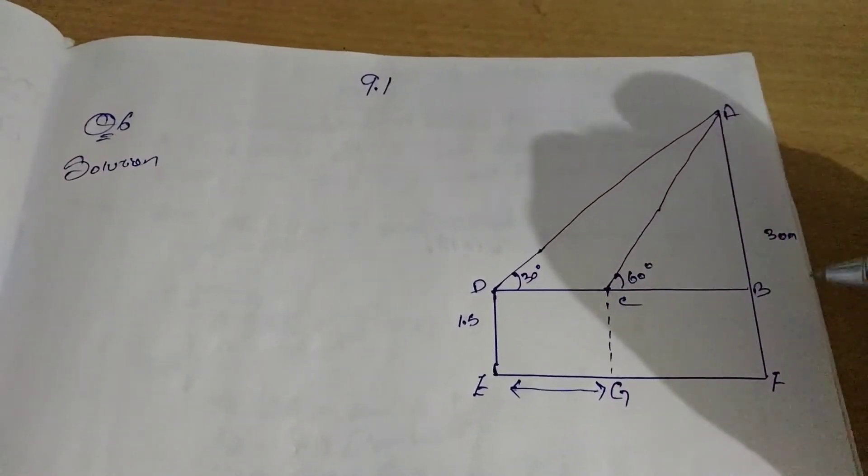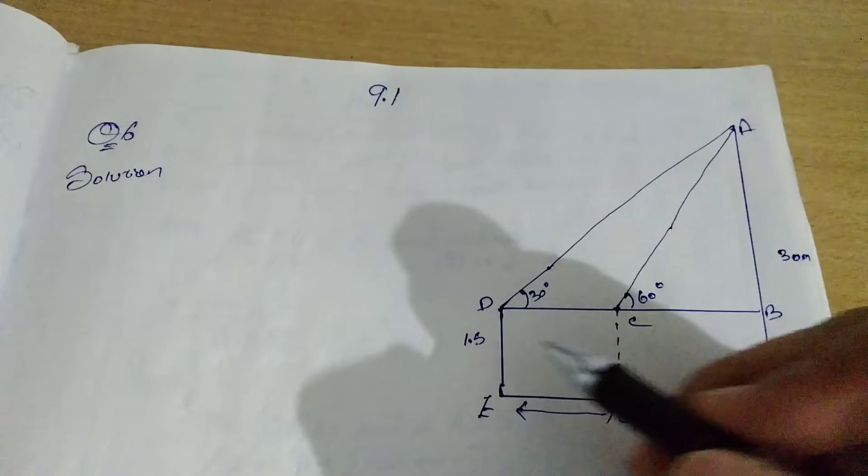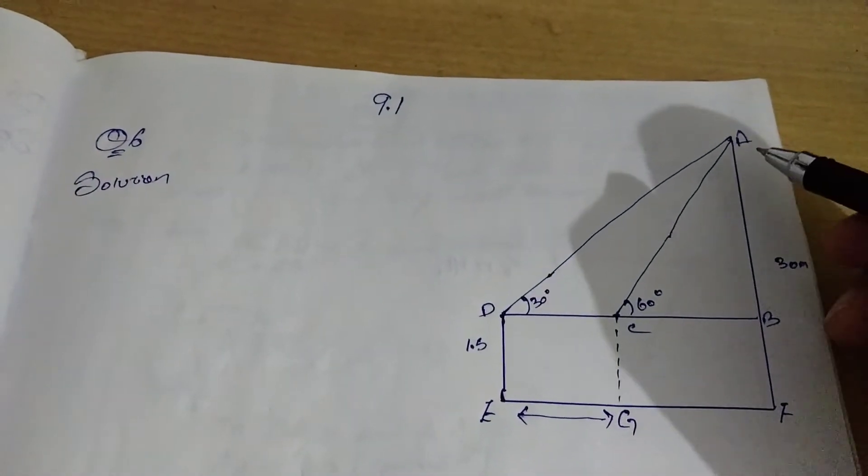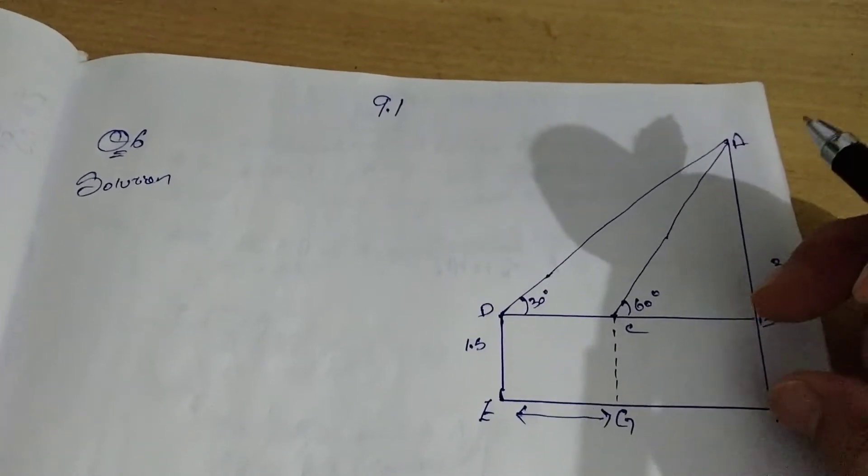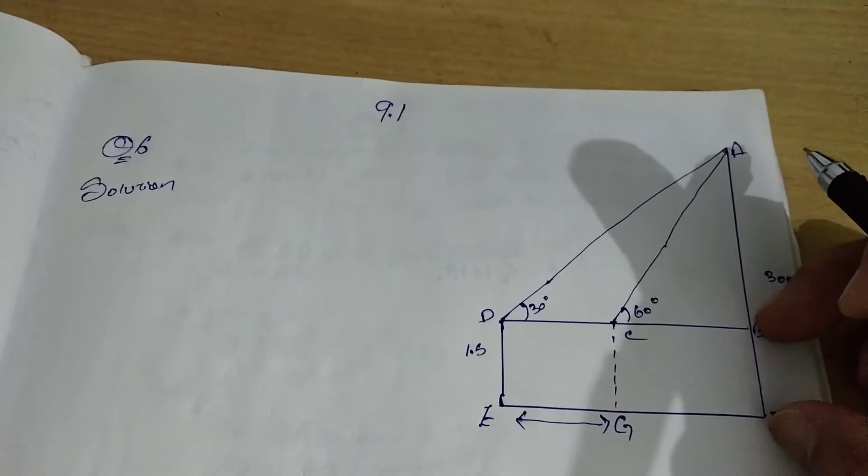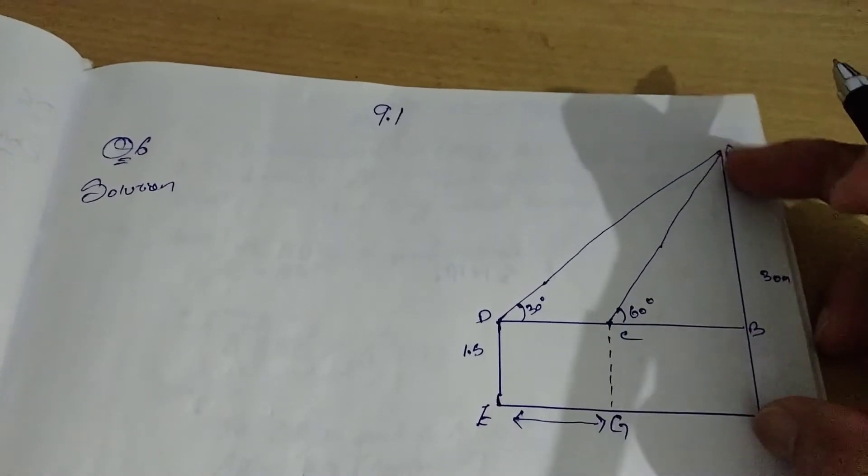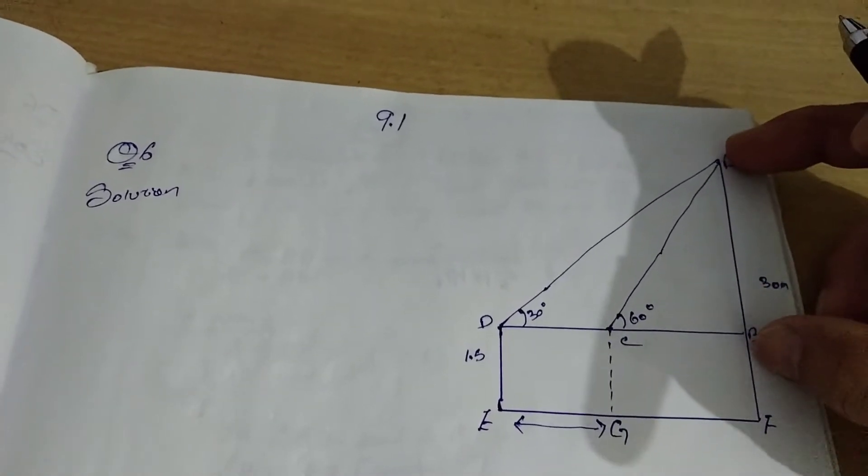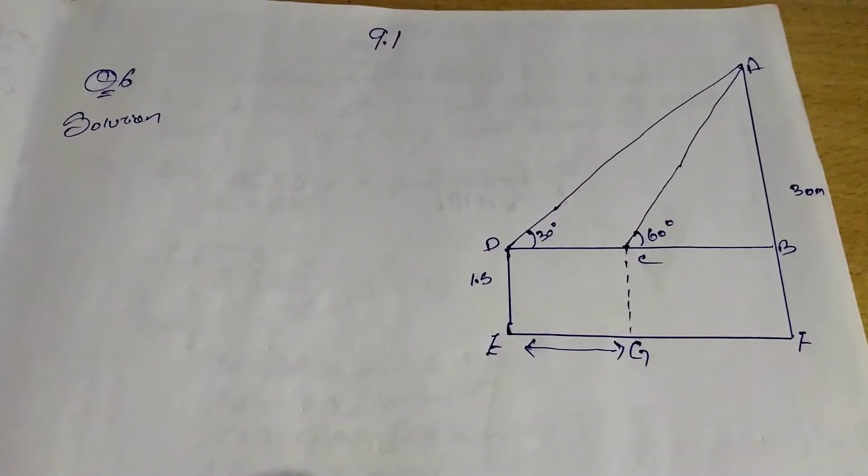Now, the height of the building is 30 meter. Where is the boy? The height is 1.5. So if you minus 30 minus the height of the boy, you will get AB. Because the height of the boy, when it comes, it becomes B and F. So if you minus 30 minus BF, you will get AB.